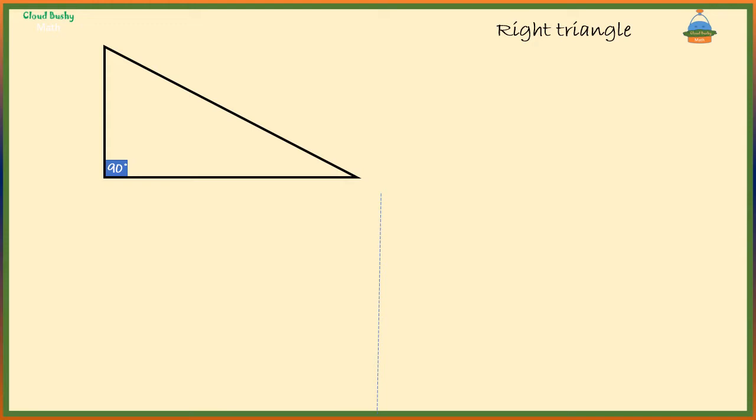Now what it means is these two remaining angles are complementary. That means they should sum up to 90 degrees.